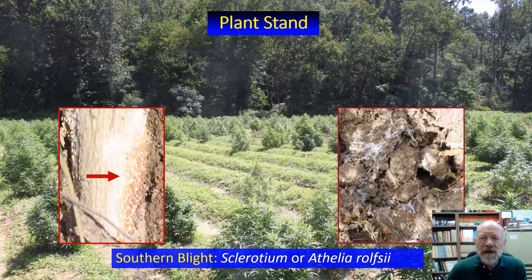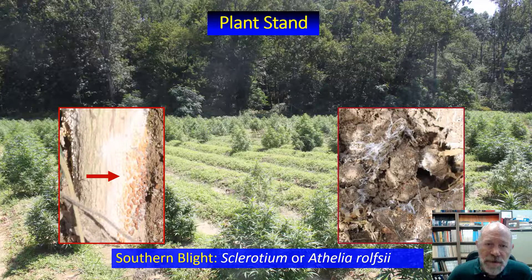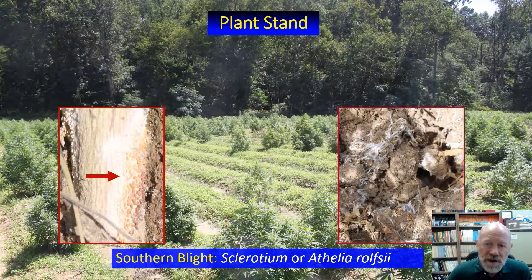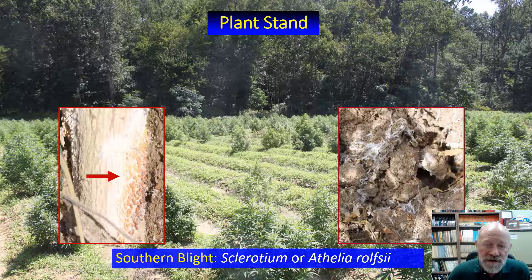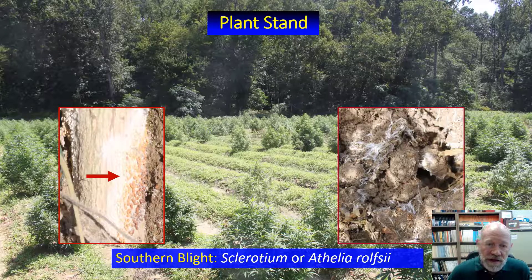Species of the plant pathogenic fungus Fusarium are often cited as the cause of hemp plants dying. But other pathogens can also kill hemp plants. Sometimes multiple pathogens can kill hemp plants in the same field, even the same area of the field. Southern blight, or Sclerotium rolfsii, is also frequently cited as the reason why hemp plants die.